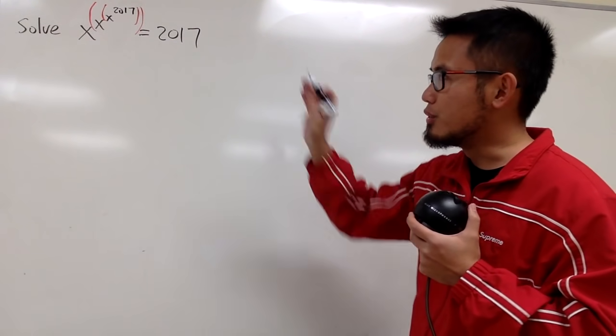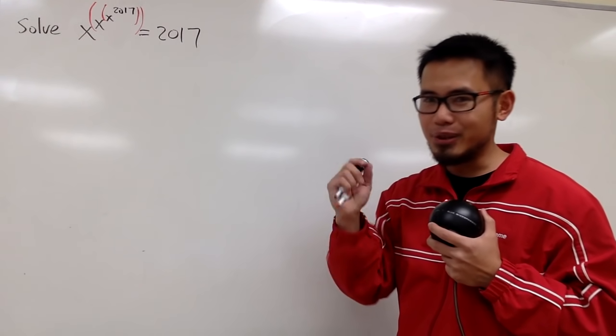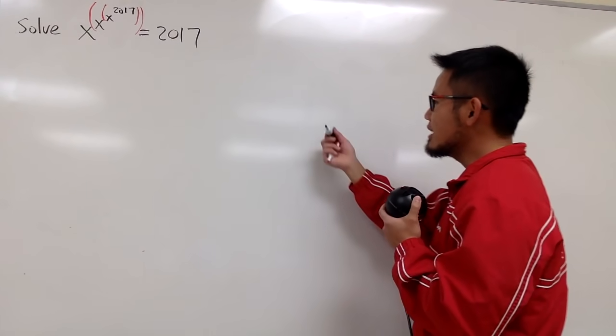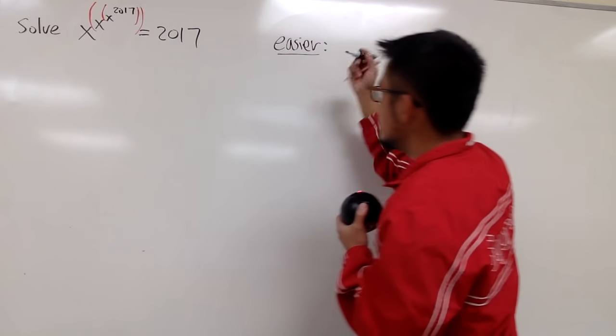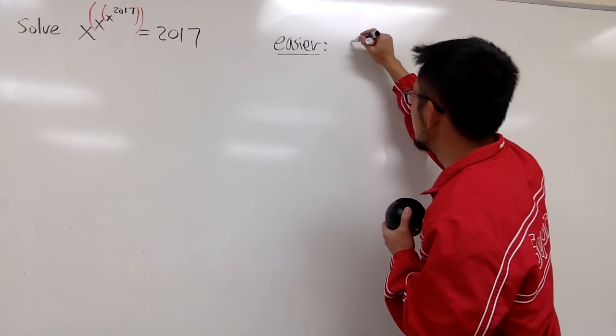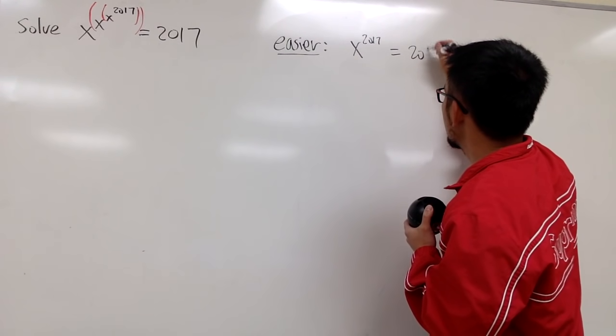An easier situation for this is, of course, what if we just have x, just one of them, and then raise to the 2017th power. So let's do that on the side right here. I will just write this down. This is the easier version of that equation: x to the 2017th power equal to 2017.